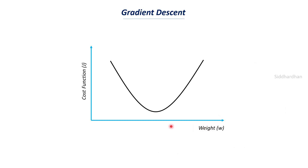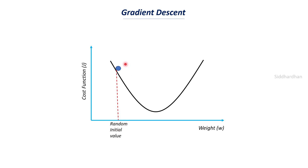If you plot weight on the x-axis and cost function on the y-axis, gradient descent is similar for all models — only some terms change. When you plot the cost function for different weight values you get a U-shaped convex curve. We take a random initial weight value; the cost function at that point is very high since it sits at the upper part of the curve.